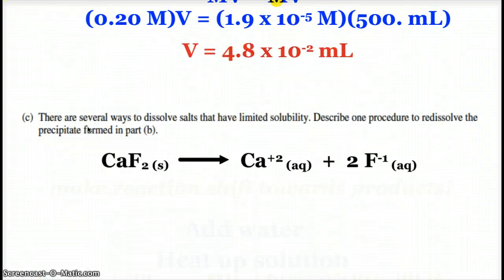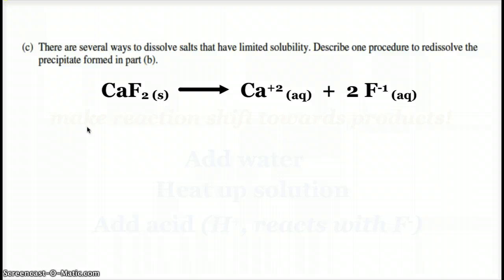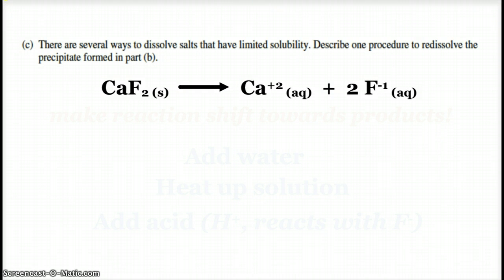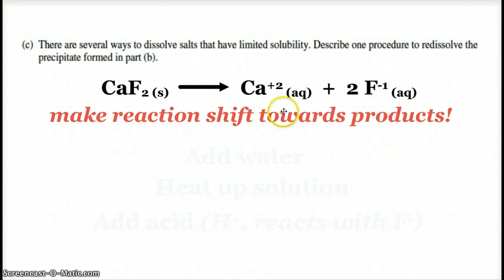And now we're down to the last part. There are several ways to dissolve salts that have limited solubility. Describe one way that we could re-dissolve the precipitate that was formed in part B. So again, if you said barium fluoride, no biggie. You're still going to get the same answers here. But how could we re-dissolve the precipitate? So here we see the dissolving of calcium fluoride. So basically, we want to do anything we can that can shift this towards the products, shift it to the right.